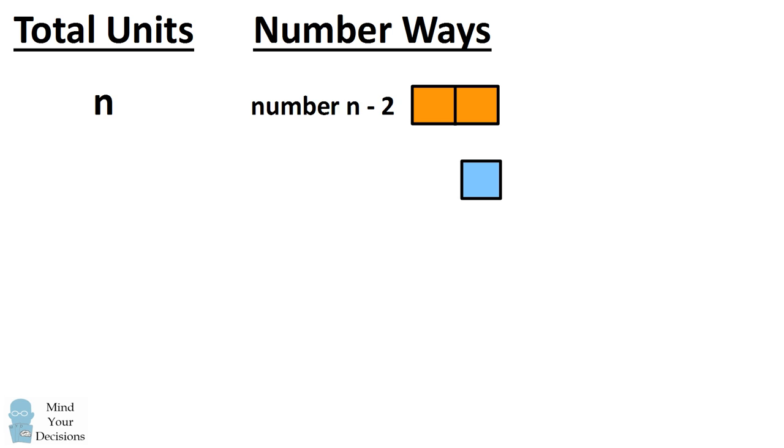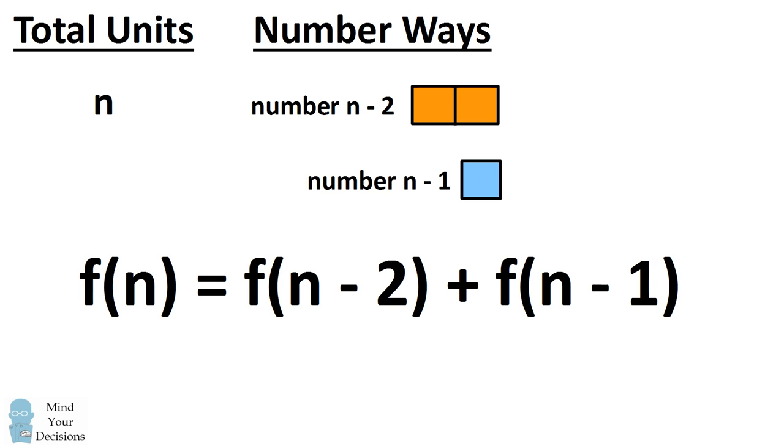We can also end the line with a short syllable, which would leave n minus one metrical beats to be filled. So the number of ways to make n units of metrical beat follows a recurrence relation that is equal to the number of ways to make n minus two plus the number of ways to make n minus one.